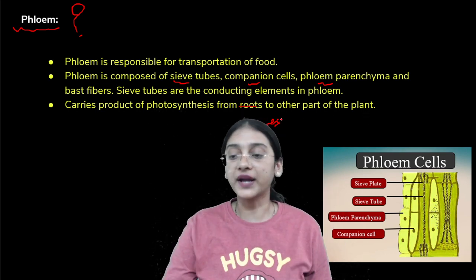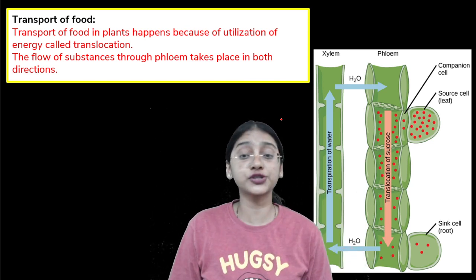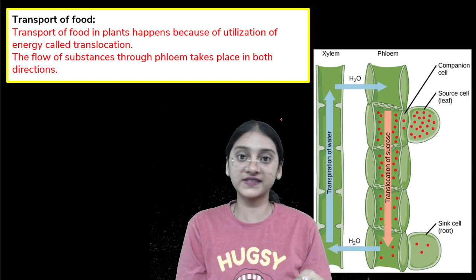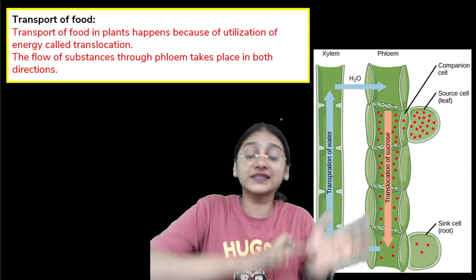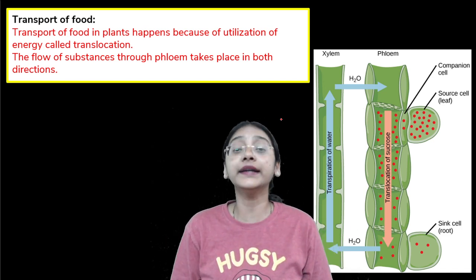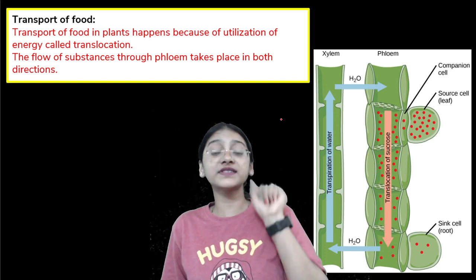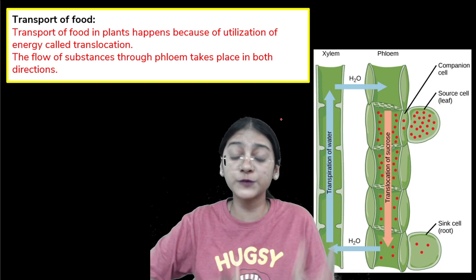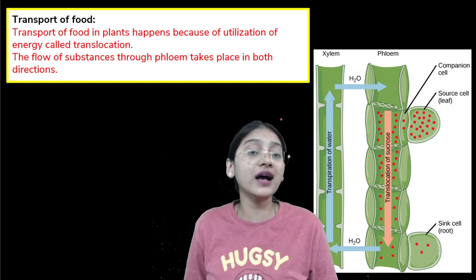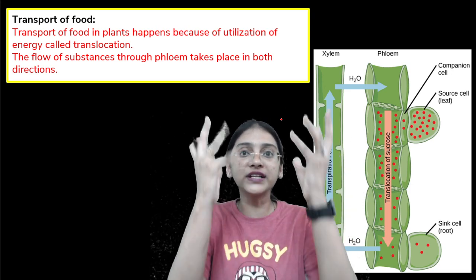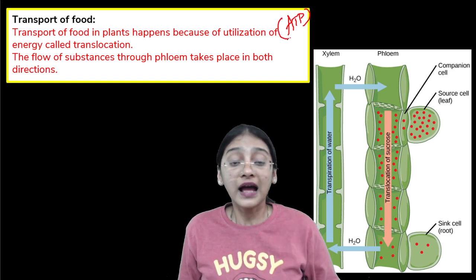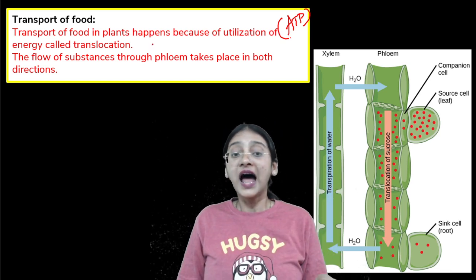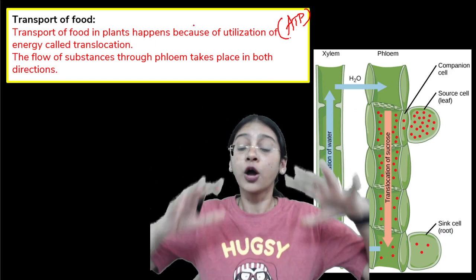So the food being transported is sucrose, produced in the leaves during photosynthesis. Glucose is a monosaccharide — a single sugar molecule — while sucrose is a disaccharide, made up of glucose and fructose. Transportation of food in plants — including sucrose and other food molecules like amino acids — utilizes energy in the form of ATP. This process of food transportation using energy is called translocation.